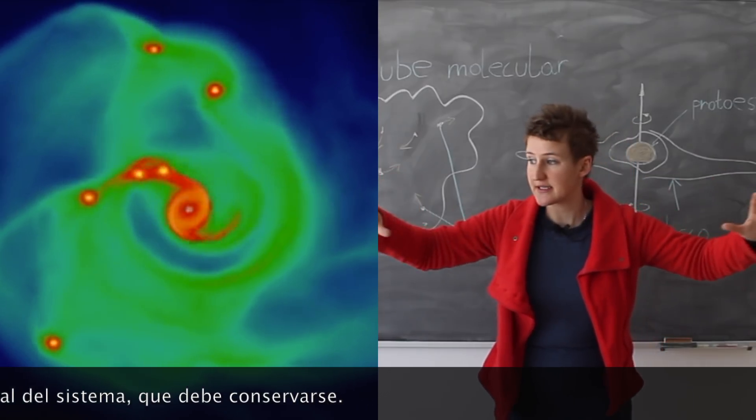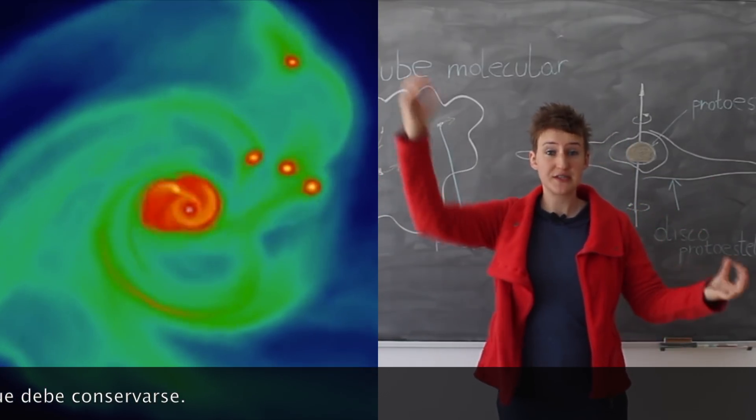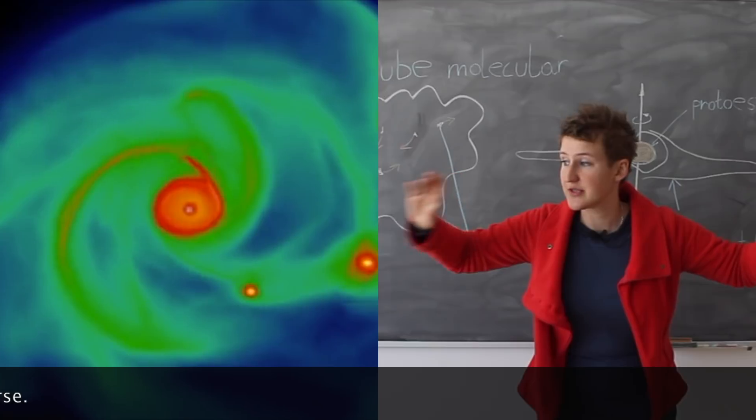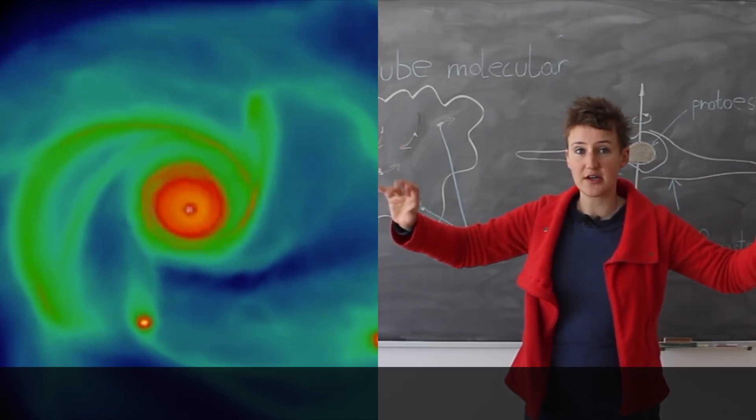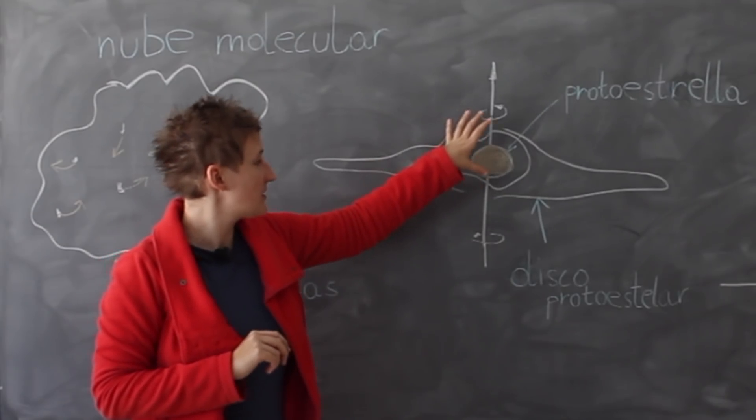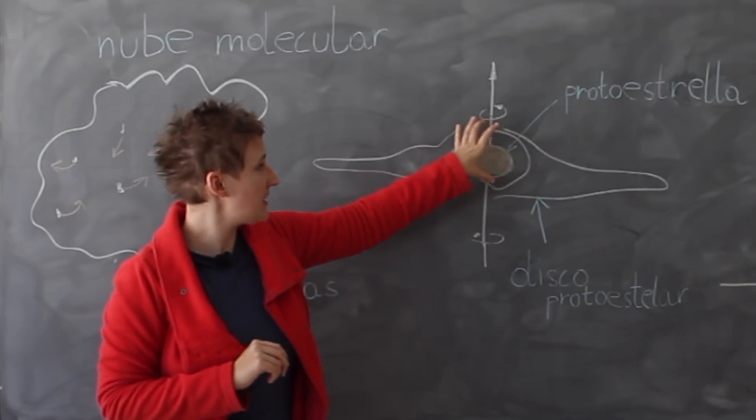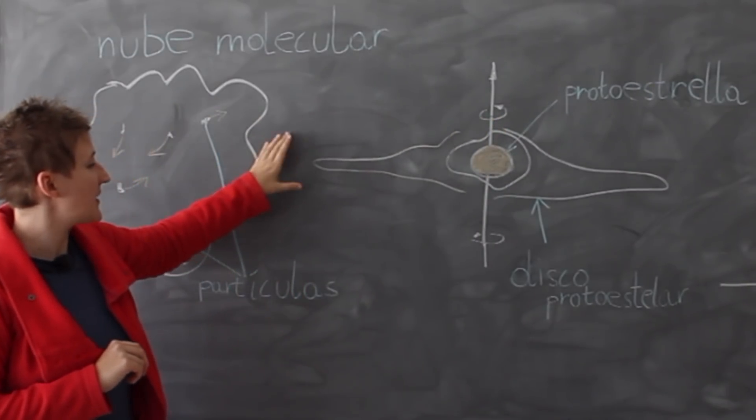And now, why do the planets form in this disk? Because they have no other choice. Because they get forced around this disk, around the protostar. For example here, there will be a bulgy thing in the middle and then there will be a disk-like thing in the outer skirt.